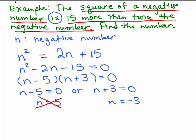So then we're saying, I wonder if the number's negative 3. So let's just see if this makes sense. The square of that number. Okay, if the number's negative 3, what would the square of the number be? It would be 9. The question is, is that 15 more than twice the negative number?